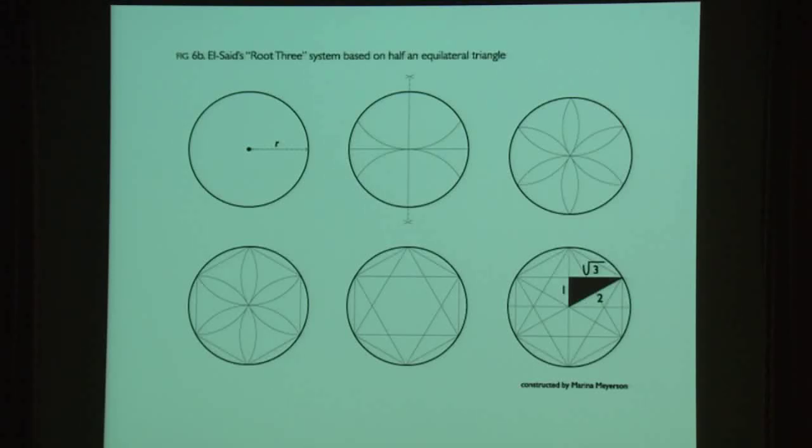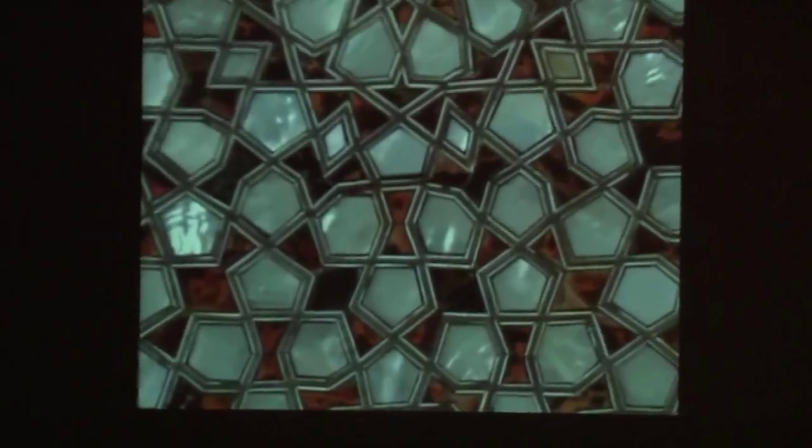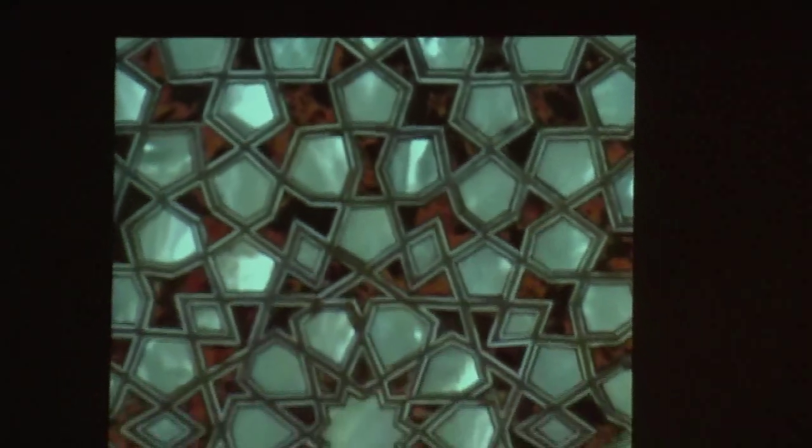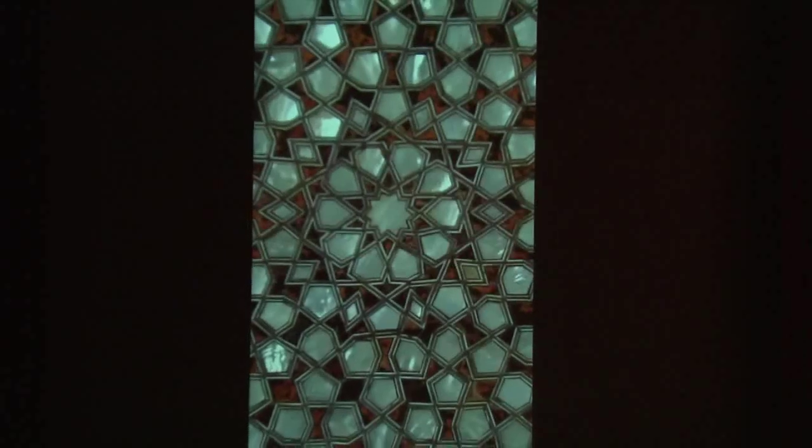What El-Bouri and Critchlow admittedly did not publish was El-Sayed's work on the root-five system, related to what is elsewhere known as the golden mean — a proportional system also present in many works of Islamic art, also based on the geometry of the circle, with a pentagon inscribed, shown here in a derivative pattern with a central ten-pointed star.